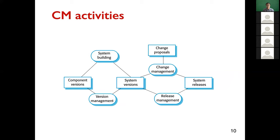This figure summarizes what is contained in software configuration management. We have component versions, system versions, and different system releases. Version management is concerned with component versions and system versions. System building is also concerned with component and system versions because we want to build components into programs. Change management and release management are concerned with system versions and system releases.